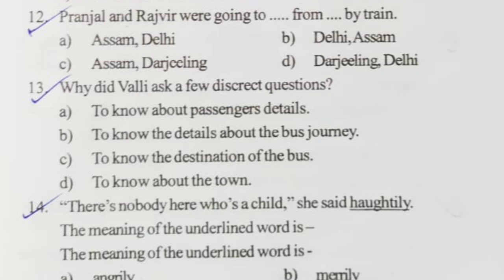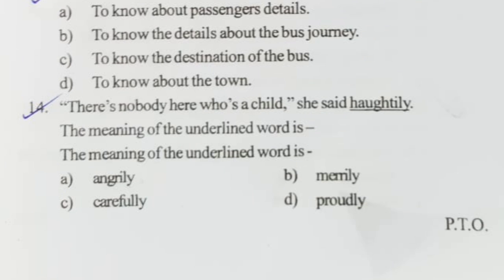Question twelve: Pranjal and Rajveer are going to Delhi by train. Option B is correct. Question thirteen: why did Vallie ask a few discreet questions to know the details about the bus journey? Question fourteen: 'There is nobody here who is a child,' said Hardly — what is the meaning of 'hardly'? Option D is correct — proudly.